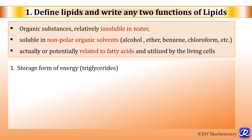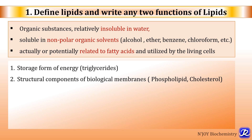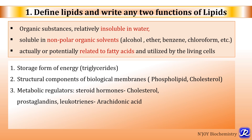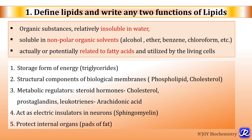The various functions of lipids: lipids are the storage form of energy — the storage form is triglyceride, stored in the adipose tissue. They are structural components of biological membranes, made up of phospholipid bilayer and cholesterol. Lipids are metabolic regulators because steroid hormones are derived from cholesterol, and prostaglandins and leukotrienes are derived from arachidonic acid. Lipids act as electric insulators in neurons — for example, sphingomyelin. Lipids also protect internal organs via pads of fat and are important for absorption of fat-soluble vitamins A, D, E, and K.